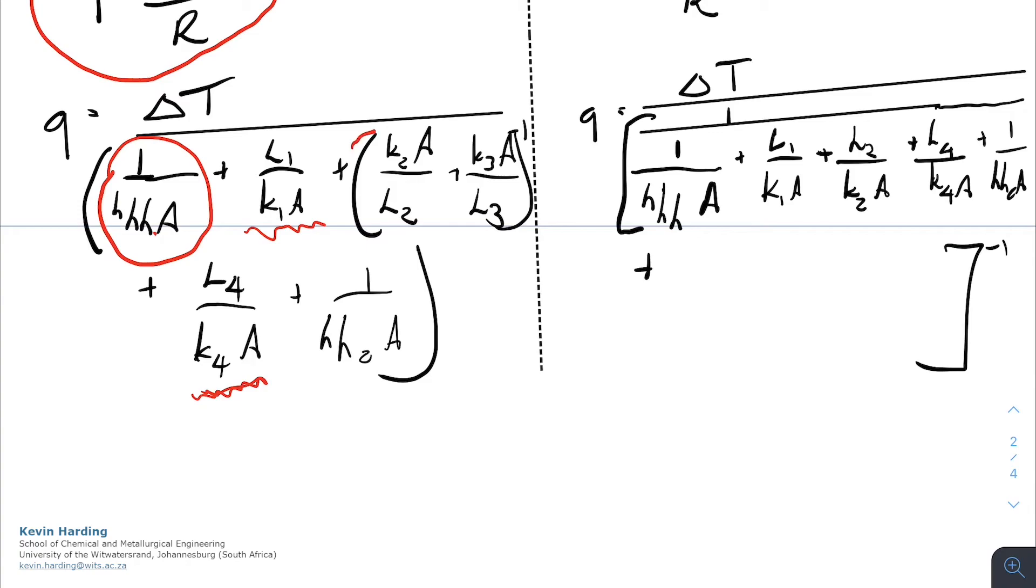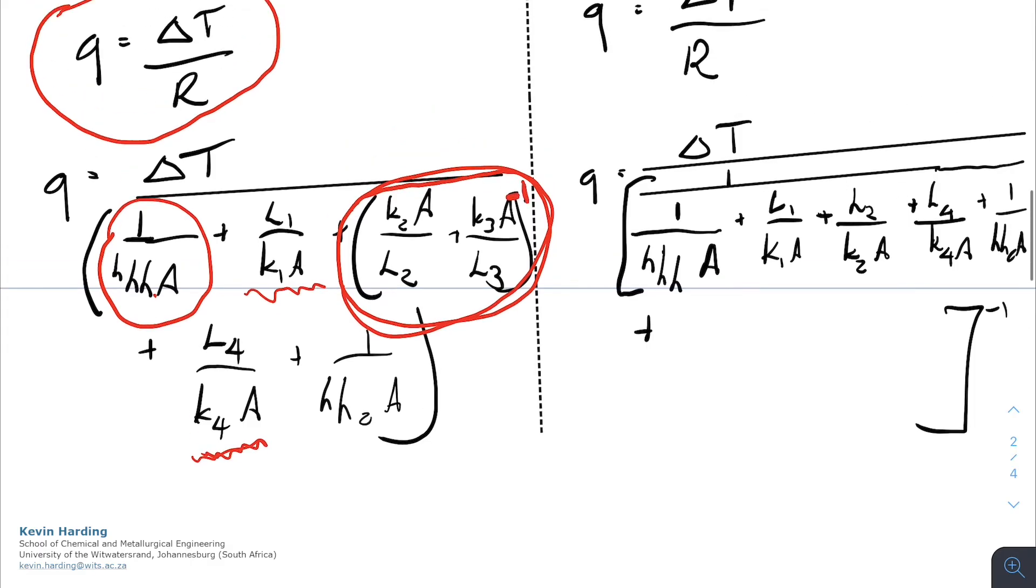But now we have to invert the KA and the L2, which we're doing in the middle here, add and then don't forget the minus one. And sorry, this is a bit messy. I'll neaten it up now.